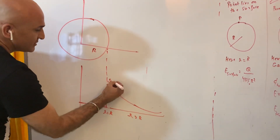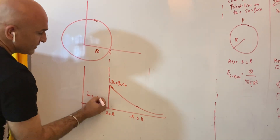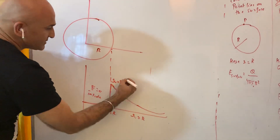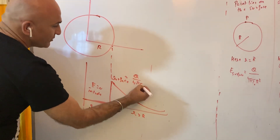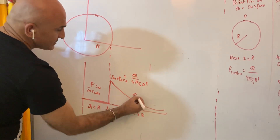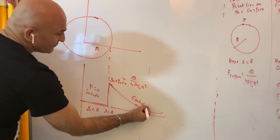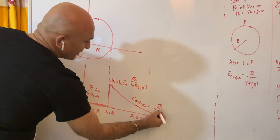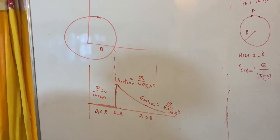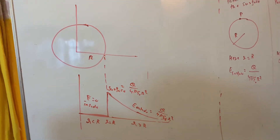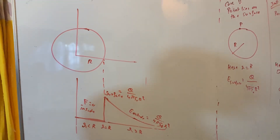So the graph shows three regions: r less than R (inside) — electric field is zero; r equal to R (on surface) — electric field is maximum, equal to Q / (4πε₀R²); r greater than R (outside) — E follows Q / (4πε₀r²), the inverse square law. This is the most important derivation from Gauss's law. Remember these three cases.